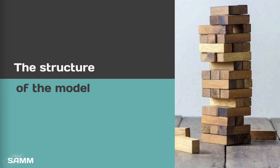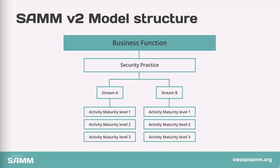Now that you know all about SAM's vision, let's unveil the SAM model. SAM has a very symmetric structure. We have a set of business functions. Under each business function there are practices. Under each practice there are two streams, and there are activities at each maturity level under each stream. The structure really hasn't changed from the 1.0 open SAM version until now.